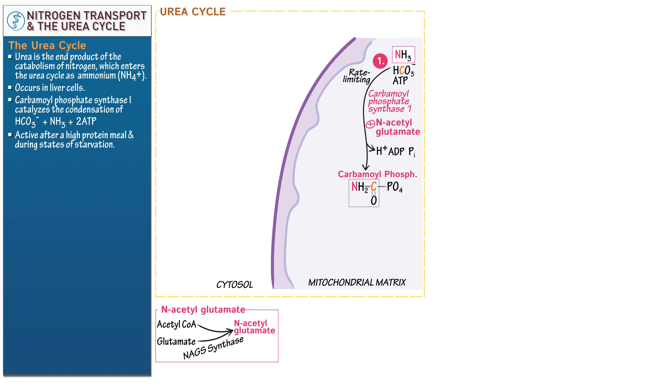Arginine positively regulates this reaction. Arginine is a marker of high protein conditions and thus positively regulates the urea cycle.